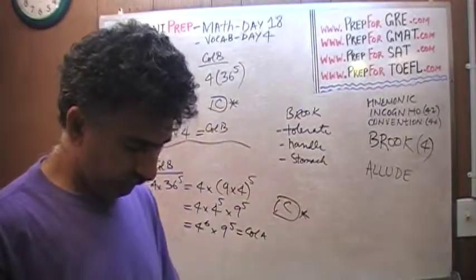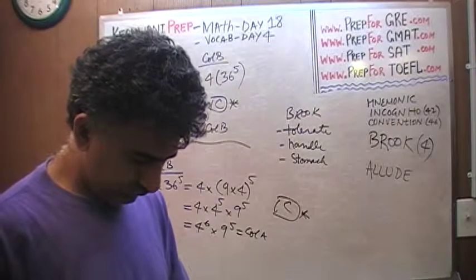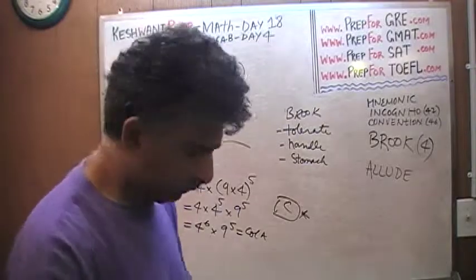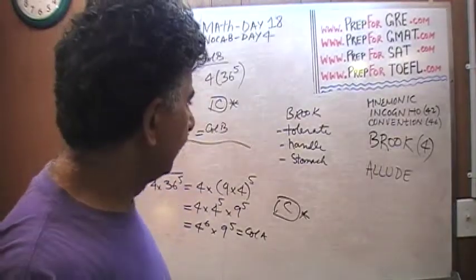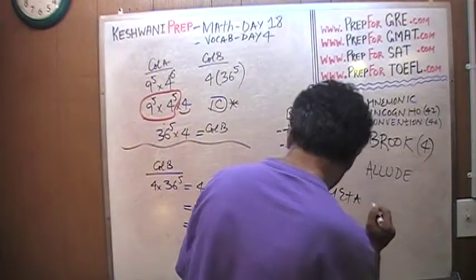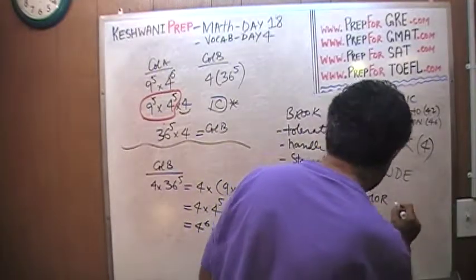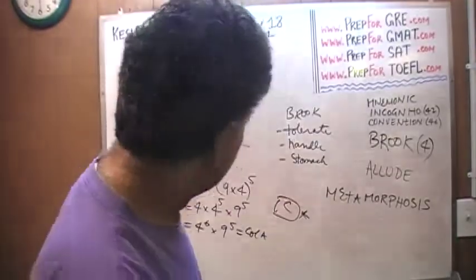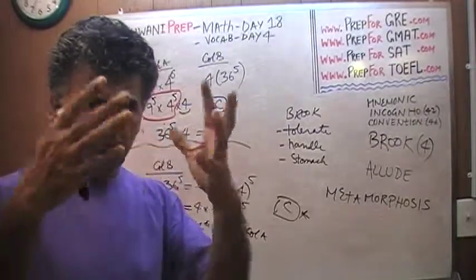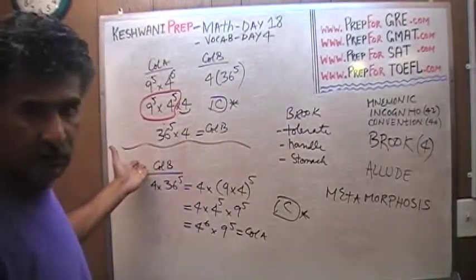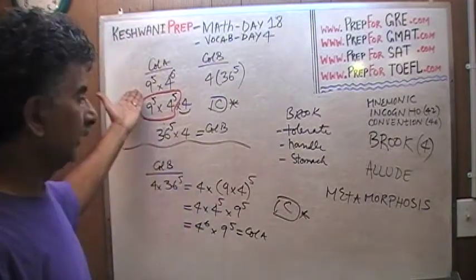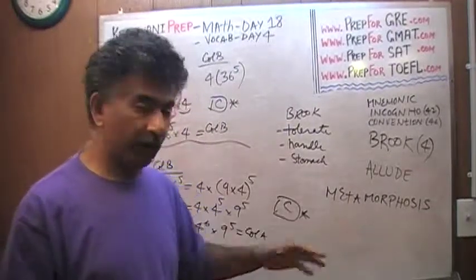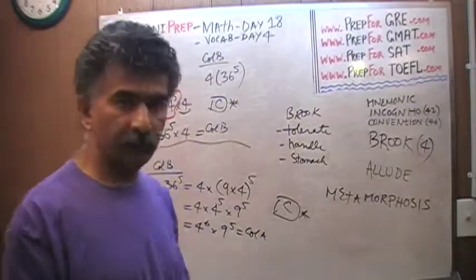Column B metamorphoses into Column A — I don't know where these words are coming from; we haven't covered this one yet. Metamorphose means to change form — one thing begins to look like something else. The noun is metamorphosis. We started with Column B, manipulated it, and it metamorphosed into the quantity in Column A. We haven't formally covered that word in vocabulary yet, but one of these days we will. For today, we are done.